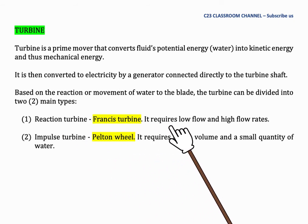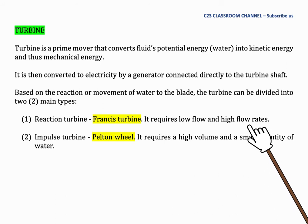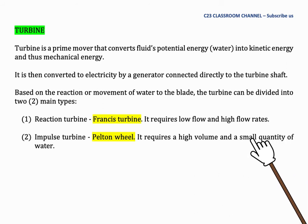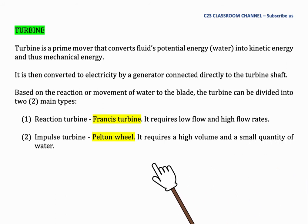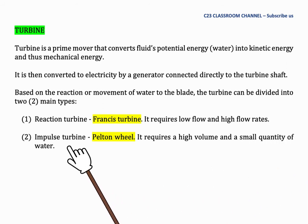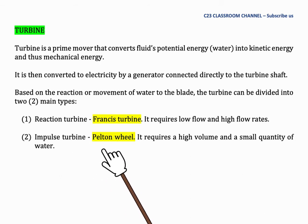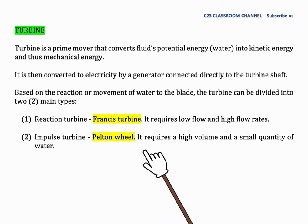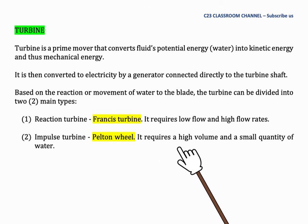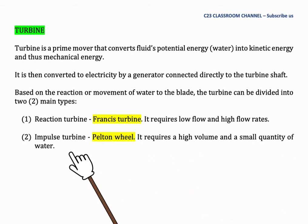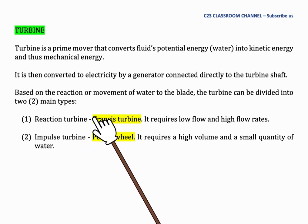It requires low flow and high flow rates. The other type is the Impulse Turbine. The example of an Impulse Turbine is the Welter Pelton Wheel. It requires a high volume and a small quantity of water. We will discuss both types of turbine.